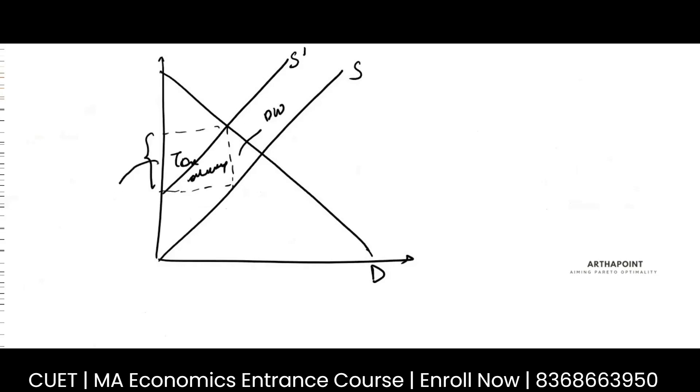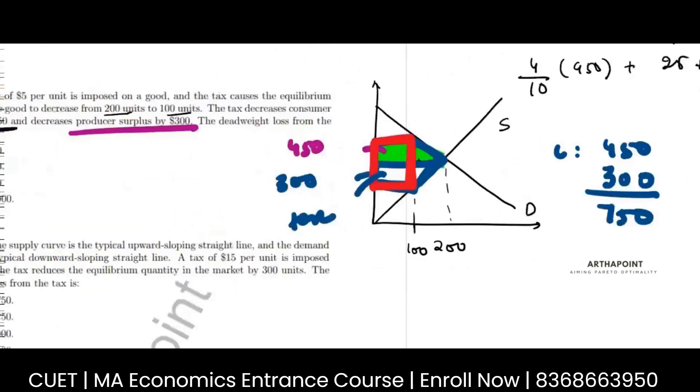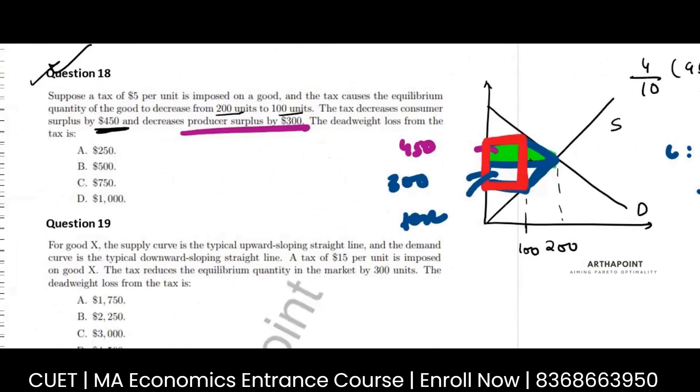So the tax collected is T into the equilibrium quantity. So I know that this area is tax, which is 5 into my equilibrium quantity. New equilibrium is 100. It will be 500.